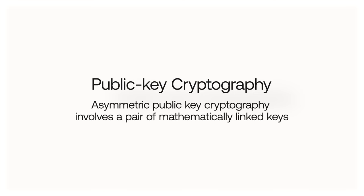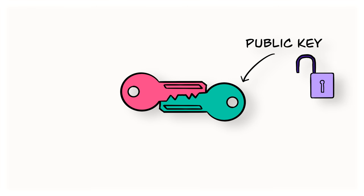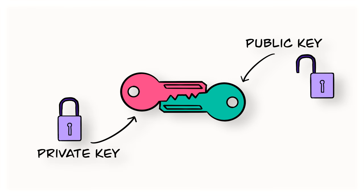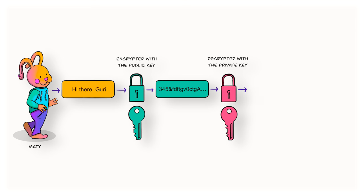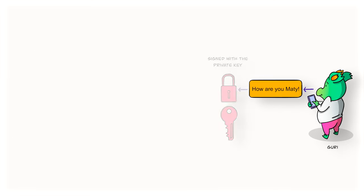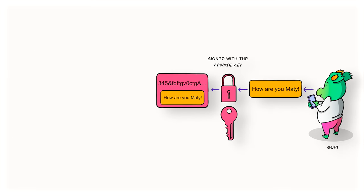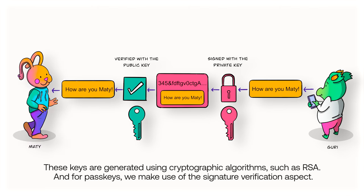Let's start with public key cryptography. Asymmetric public key cryptography involves a pair of mathematically linked keys: a public key, which is shared openly, and a private key, kept secret by the owner. When a message is encrypted with the public key, only the corresponding private key can decrypt it, ensuring confidentiality. At the same time, a message signed with a private key can be verified with the public key, authenticating the sender's identity. These keys are generated using cryptographic algorithms such as RSA, and for passkeys we make use of the signature verification aspect.